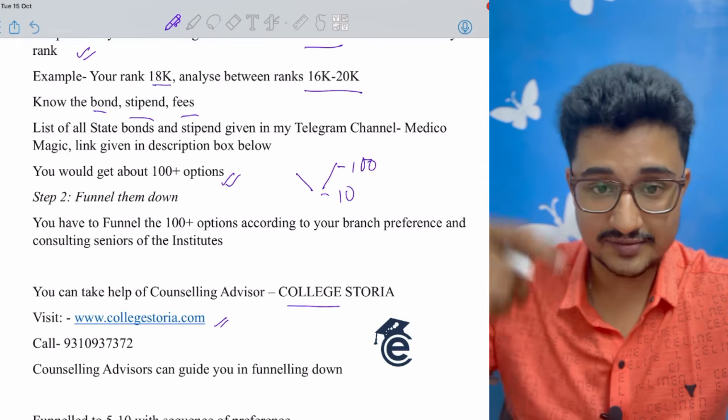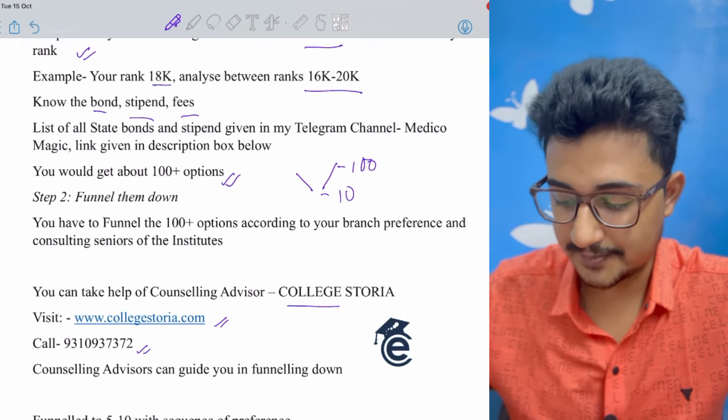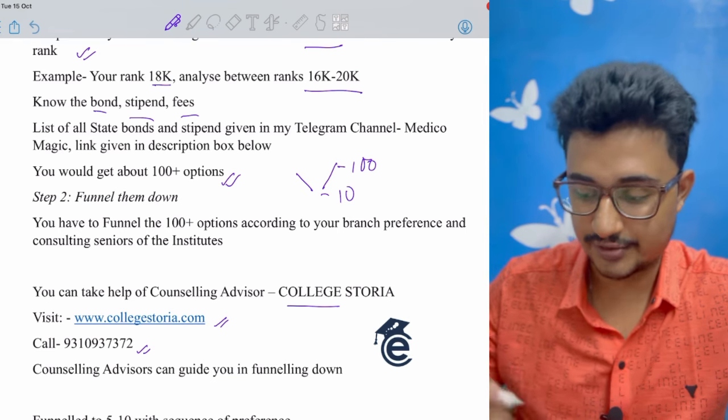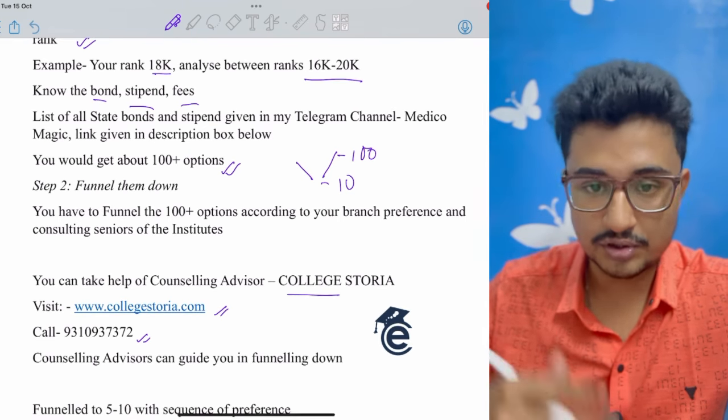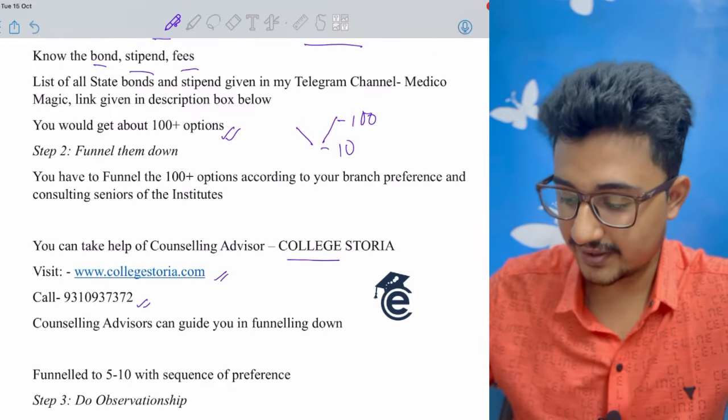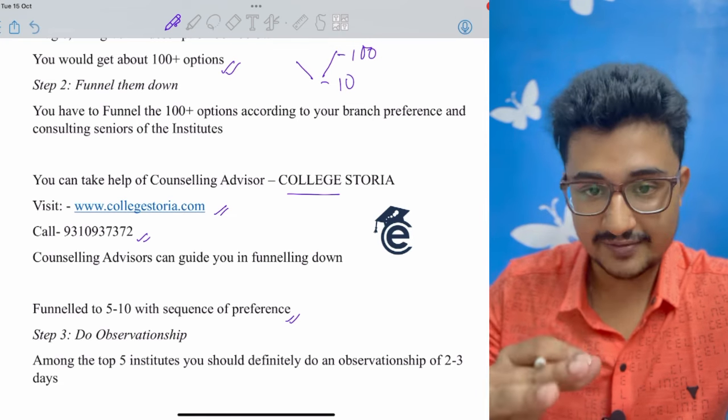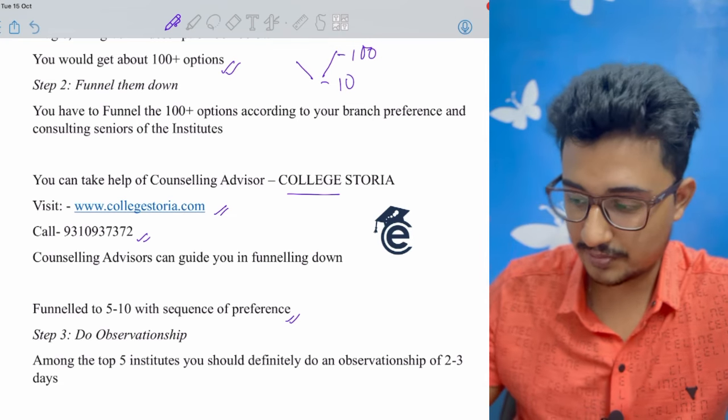You can also take help of counseling advisor from College Storia. The website is given here and given in my description box below also. You can directly call them and their counseling advisors would guide you and they could also help you to funnel down the options. After that you have funneled down to 5 to 10 options. Among them you would have top 5 institutes in your mind.